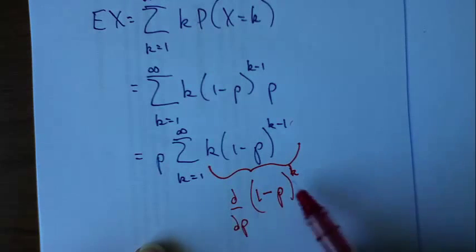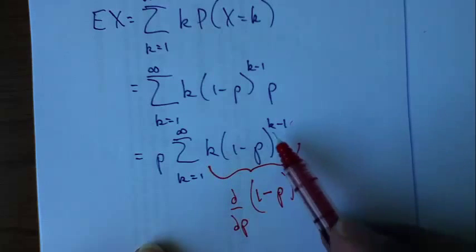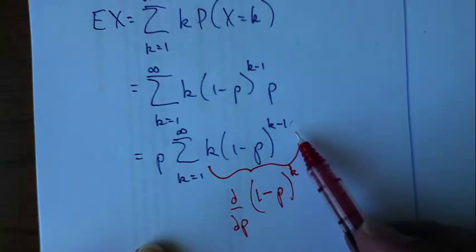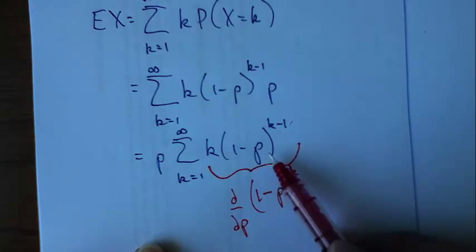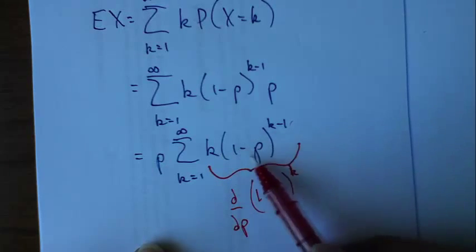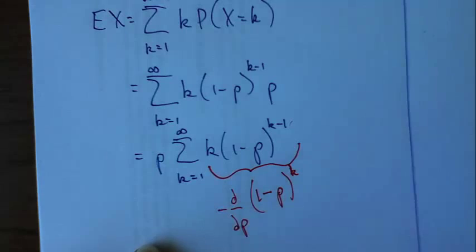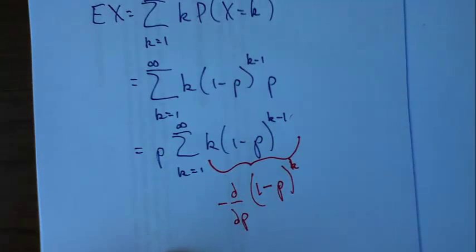If I differentiate this with respect to p, the k comes down. I get k times 1 minus p to the k minus 1 times the derivative of the stuff on the inside, which is going to be negative 1. So I've got to further compensate by putting a minus sign there.